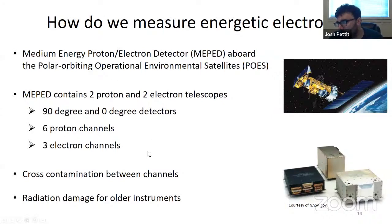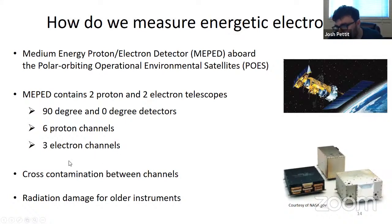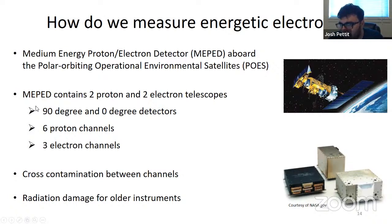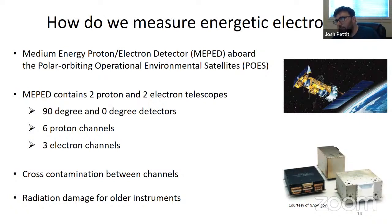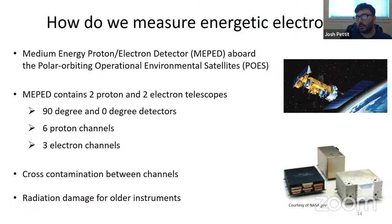Some details that are important: the original instrument has three electron channels — three integral channels. There's a greater than 30 keV, a greater than 100 keV, and a greater than 300 keV channel. The other important aspect is the 90-degree and zero-degree detector. At high latitudes, the zero-degree detector looks straight down the magnetic field line, so it's measuring primarily precipitating electrons, whereas the 90-degree detector is 90 degrees offset. So at high latitudes, the 90-degree detector is measuring trapped flux and the zero-degree detector is measuring precipitating flux.